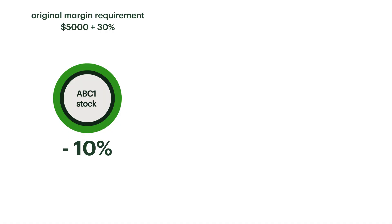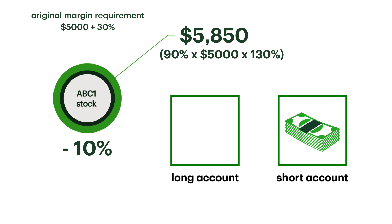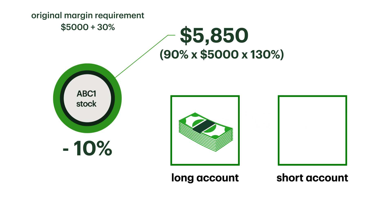Let's build off our last example to explain. If the next day our stock drops ten percent, then the margin required decreases to five thousand eight hundred and fifty dollars. Because of this six hundred and fifty dollar improvement on margin, you'll also see a mark to market adjustment moving from your short account to your long account.